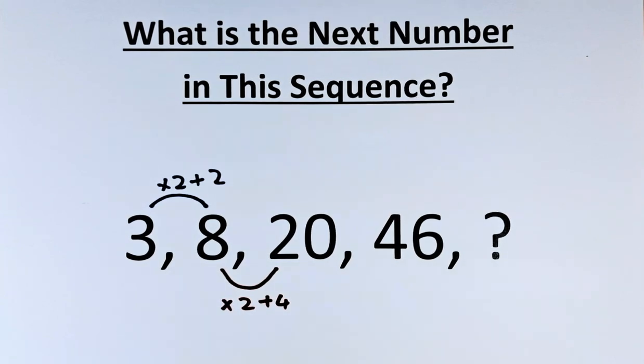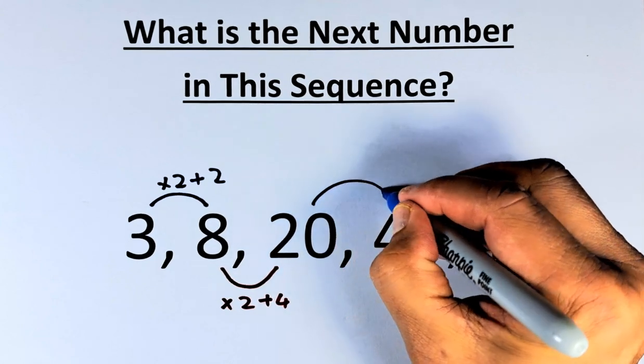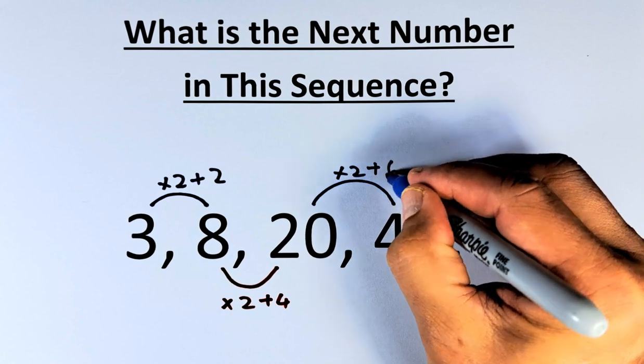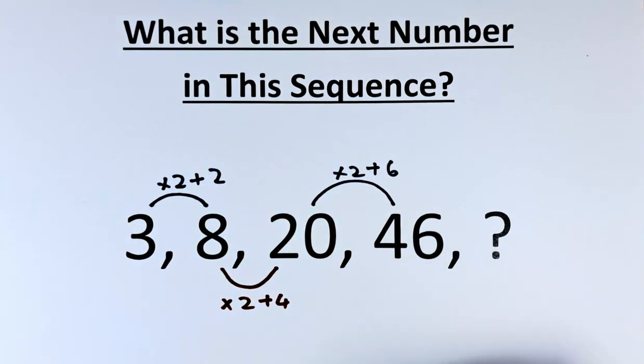And now you get the hang of the pattern. So we are again going to multiply by 2. 20 to 46, you multiply by 2. And then you're going to add 6 from 2, 4 and 6. So 20 times 2 is 40. 40 plus 6 is 46. That's how we get 46.